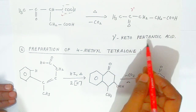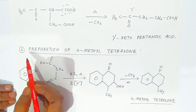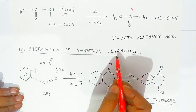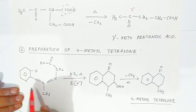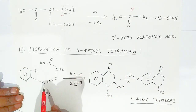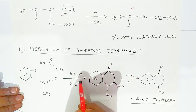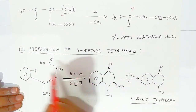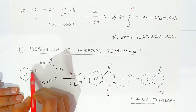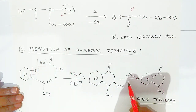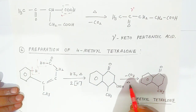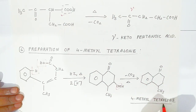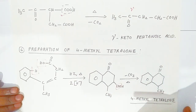The sixth application is preparation of 4-methyl tetralone. The unsaturated acid, when heated in presence of HI, undergoes an addition reaction. Heating the compound causes elimination of carbon dioxide, giving 4-methyl tetralone, which is a very important compound.